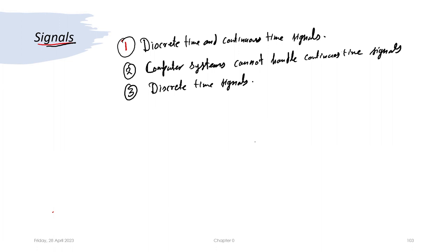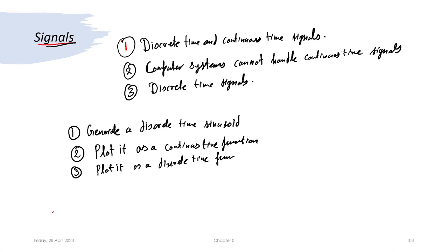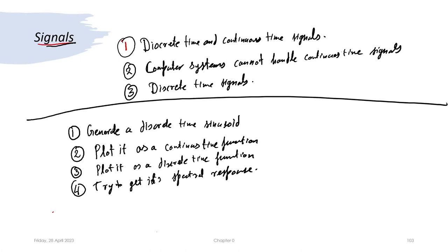In this lecture, our agenda is fairly simple. One, generate a discrete time sinusoid. Two, plot it as a continuous time function. Three, plot it as a discrete time signal. Four, try to get its spectral response. This is our four-point agenda for this lecture, so let us start.